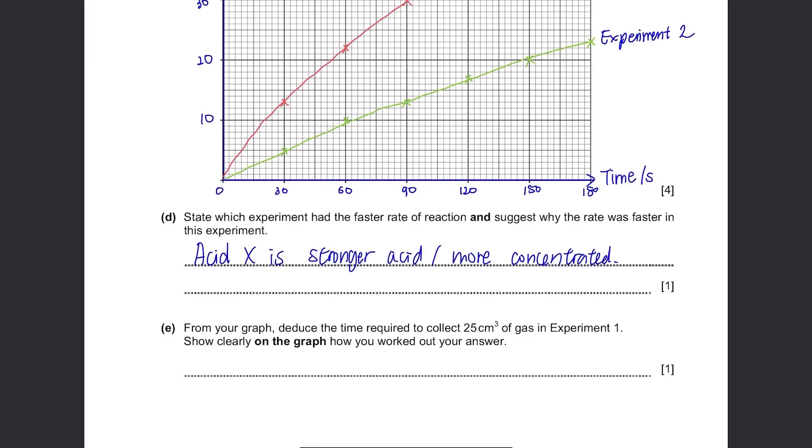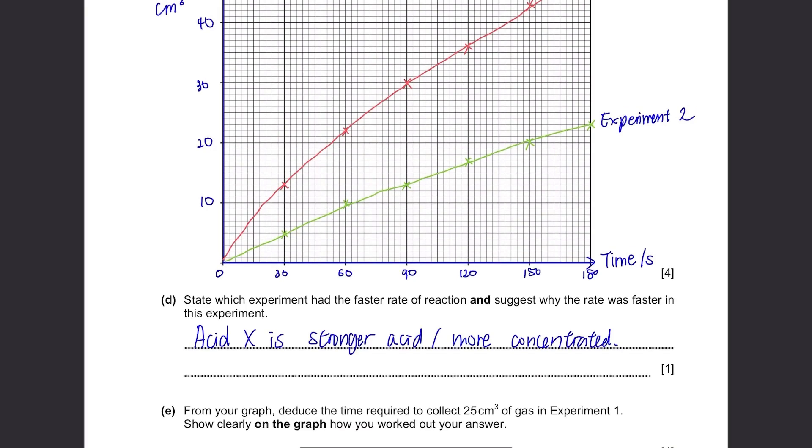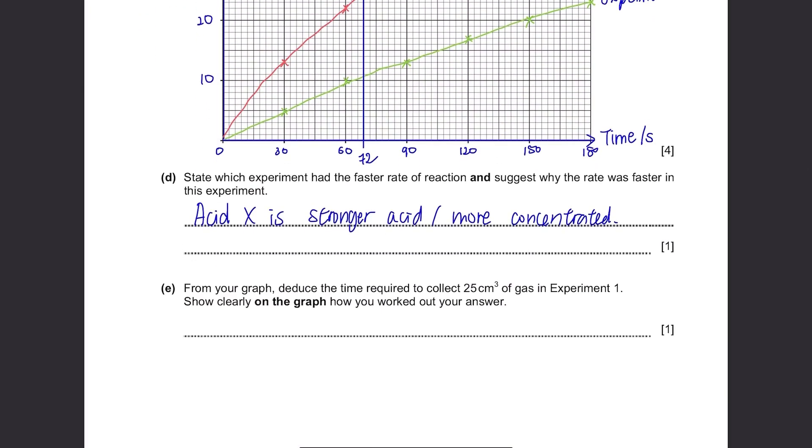Part E. From your graph, deduce the time required to collect 25 cm³ of gas in experiment 1. Show clearly on the graph how you worked out your answer. We first need to see where the graph is at 25 cm³. Show clearly it's 72 seconds so write down 72 seconds and leave evidence on the graph.